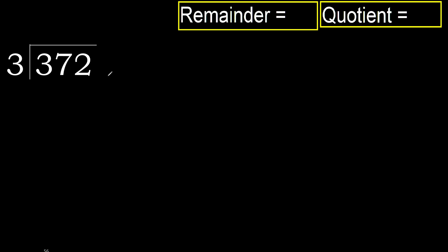372 divided by 3. 3 is not less, therefore with 3. 3 multiplied by which number is nearest to 3 but not greater? 3 multiplied by 2 is 6 — 6 is greater. 3 multiplied by 1 is 3, is not greater. Ok, subtract. Next.